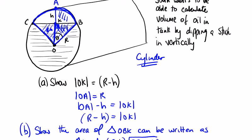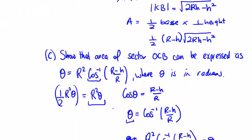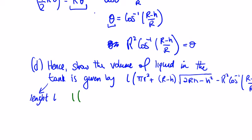In part D we're asked for the volume of liquid in a tank of length L. It's going to be L times the cross-sectional area — it's a prism with a circle at the front. So we take the area of the circle, take away the area of the sector we just found, and add on the area of the triangle. That gives us: L times (area of circle minus area of sector plus area of triangle), where the area of the circle is pi R squared.